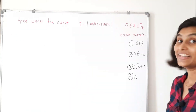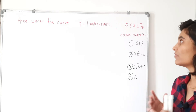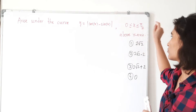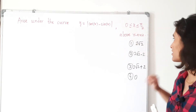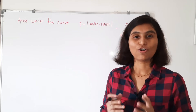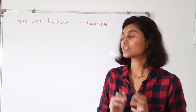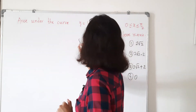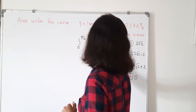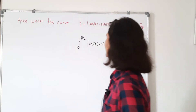The answer is π/4. Now let's solve another interesting question: the area under the curve y equals |cos x − sin x| for 0 ≤ x ≤ π/2, above the x-axis. The options are 2√2, 2√2 − 2, 2√2 + 2, and 0. Area under the curve means integration, so we need to find the integral of |cos x − sin x| from 0 to π/2.